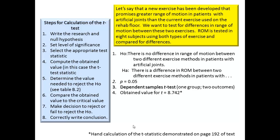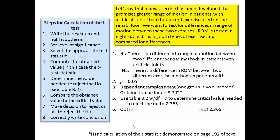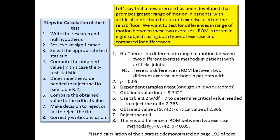We go through the steps on page 192 of the book to calculate the value of t, and find that it's 8.742 for this particular sample. We then go to table B2 and, using degrees of freedom of 7 — because 8 minus 1 is 7 — we determine the critical value needed to reject the null is 2.365. Since our obtained value is greater than the critical value, we reject the null and correctly conclude that there is a difference in range of motion between two exercise methods, where t(7df) = 8.742 and p < .05.